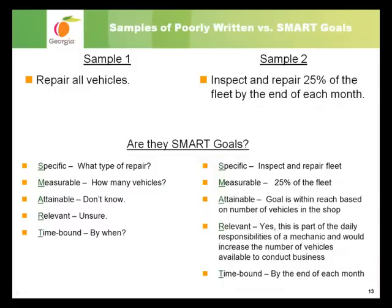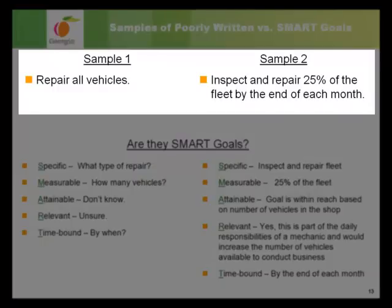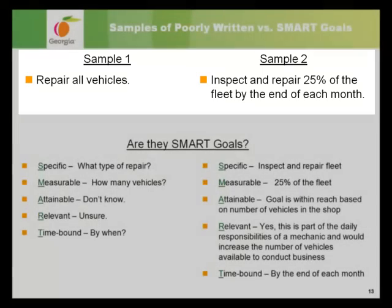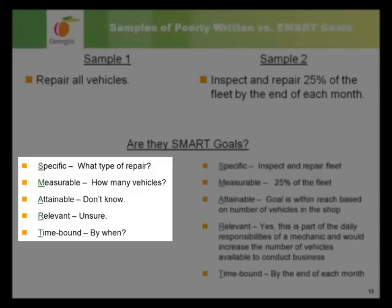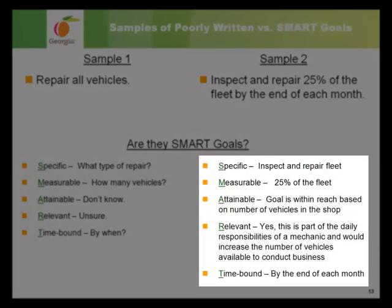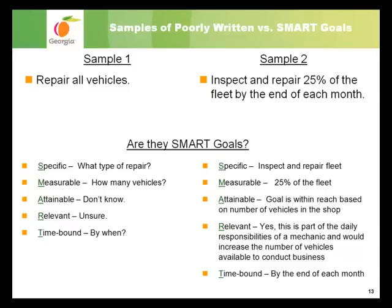Here are some sample goals for a mechanic position within the Department of Transportation. The first example is 'repair all vehicles,' while the second example is 'to inspect and repair 25% of the fleet by the end of each month.' The first example doesn't provide enough information to be SMART — it isn't specific, measurable, or time-bound. The second example is a SMART goal. Sample one might be something listed as a job responsibility; restating a job responsibility as a SMART goal helps employees understand exactly what is expected and makes it easier to determine their success. Pause the presentation to read through the SMART criteria for the goal on the right, then continue.